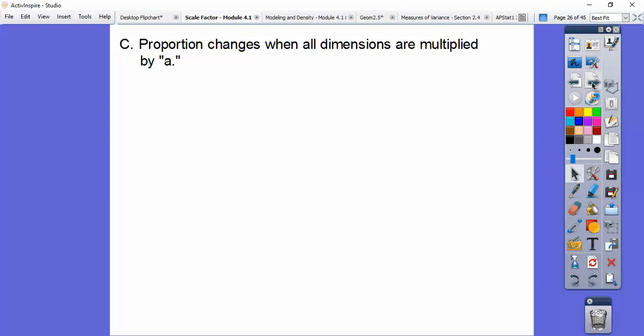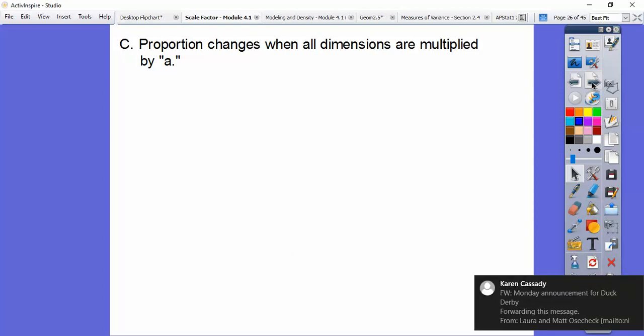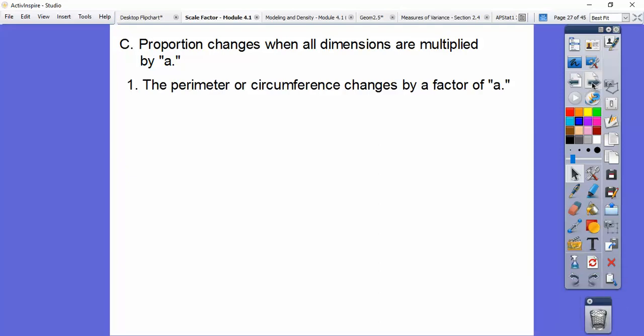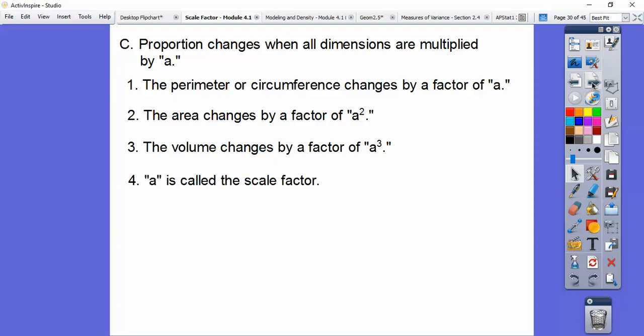Here's our proportion. When all the dimensions are multiplied by a, and a is our scale factor, that's what this lesson is about. If you multiply all the dimensions by a, then your perimeter and circumference changes by a factor of a. Your area or surface area will change by a squared. Think area is square units, so it's a squared. And volume will change by a cubed. Just think volume is cubic units. This a is called our scale factor.